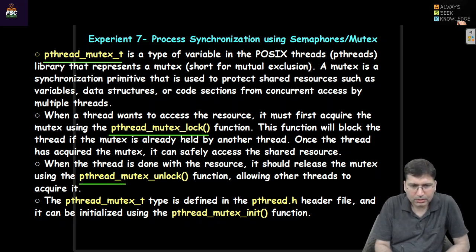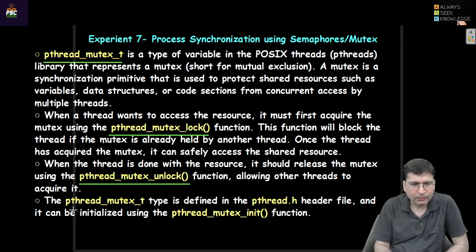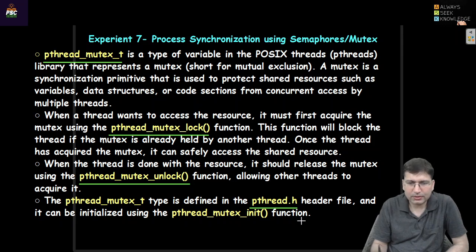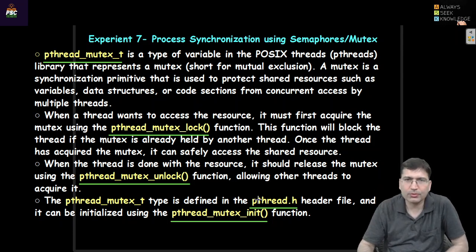In order to release the lock, we use the pthread_mutex_unlock function. The pthread_mutex_t type is defined in the pthread library, so we need to include that particular header file. Once we declare it, we need to initialize it. For initialization, we use pthread_mutex_init. These are very important functions — please do remember.